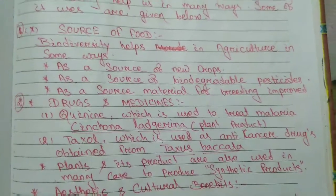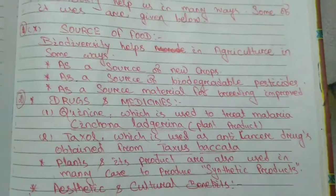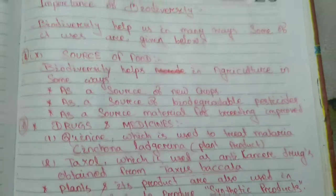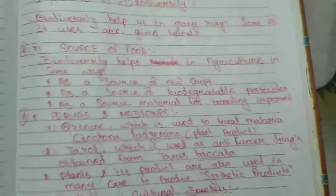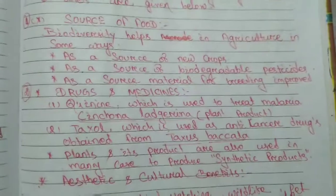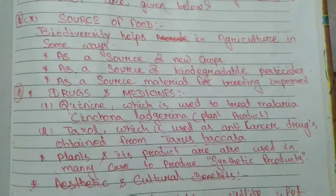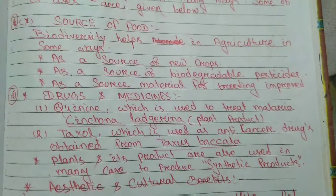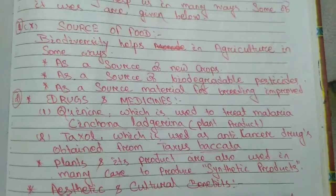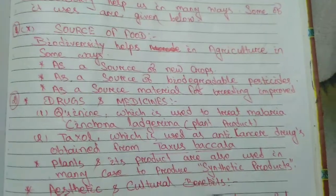The first importance is that biodiversity serves as the main source of food. Biodiversity helps in agriculture in many ways.